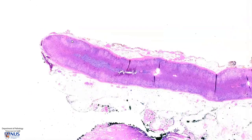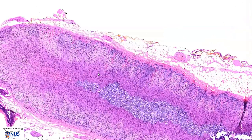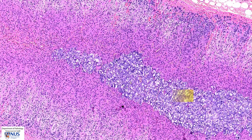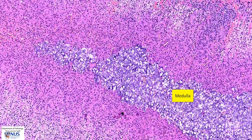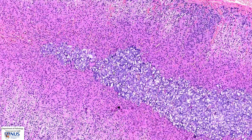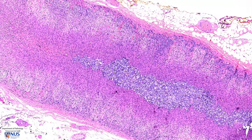Let's have a very quick recap of the normal adrenal gland. This is the normal adrenal cortex, which is composed of zona glomerulosa, zona fasciculata, and zona reticularis. And in the center, we have the adrenal medulla. This always appears bluer because the cells have more amphiphilic or bluish cytoplasm. It is from the adrenal medulla that pheochromocytomas arise.